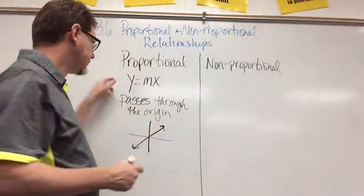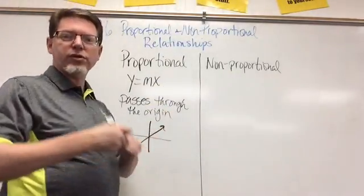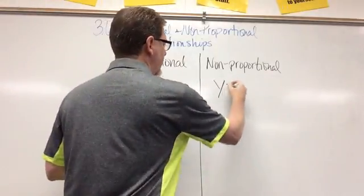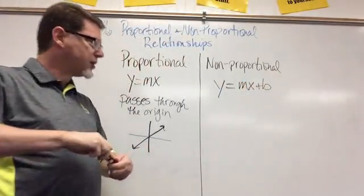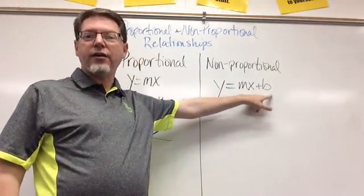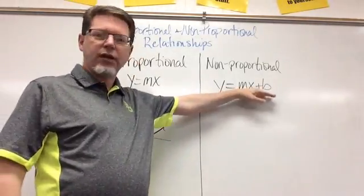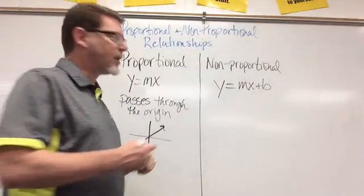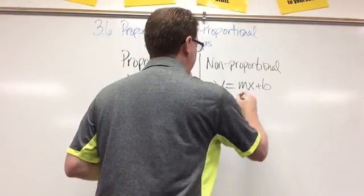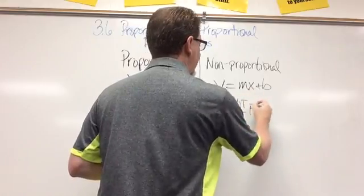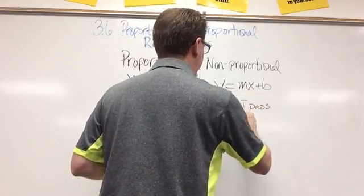Now let's look at the contrast of that. In a non-proportional relationship, we're going to have an equation that looks like y equals mx plus b. There's always going to be a plus or a minus because you have a y intercept that is not the origin. So we're going to have something different. It also does NOT pass through the origin.